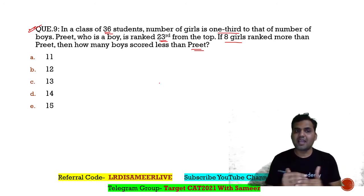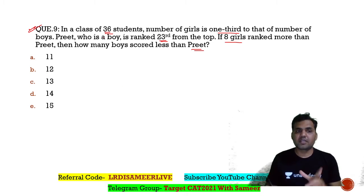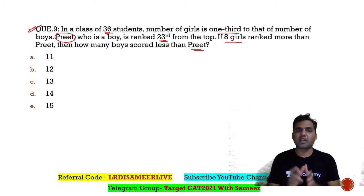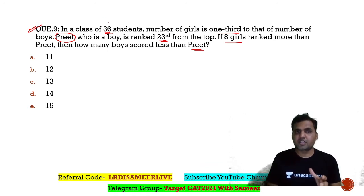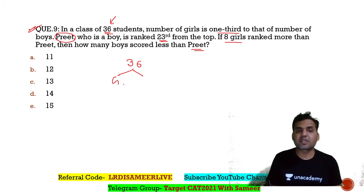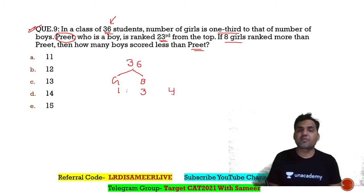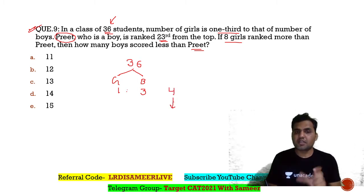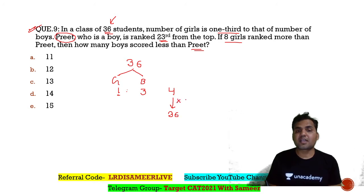In these questions, you need to know the relative positioning of people standing in a row. The reference here is taken with respect to Preet. Total students are 36. Since the number of girls is one-third the number of boys, the ratio is 1:3. Out of every 4 students, 1 is a girl and 3 are boys. Since 36 is nine times 4, there are 9 girls and 27 boys.